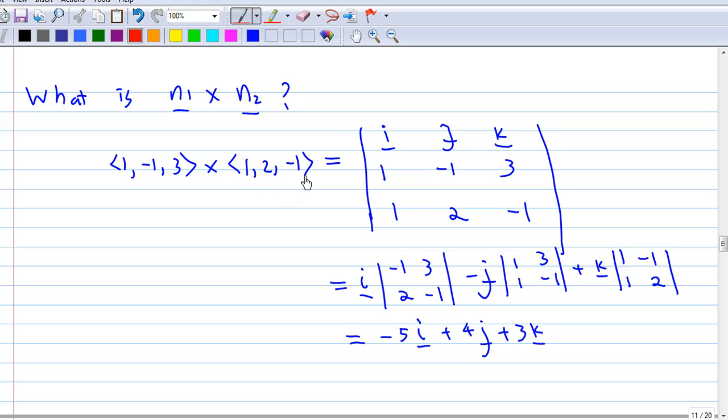So you take the 3 by 3 determinant with i, j, k in the first row, (1, -1, 3) on the second row, and (1, 2, -1) in the third row.